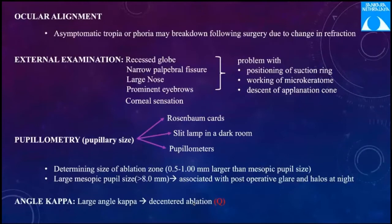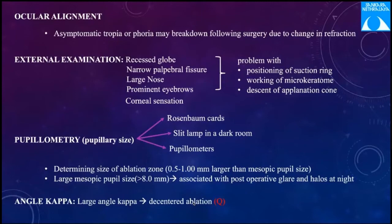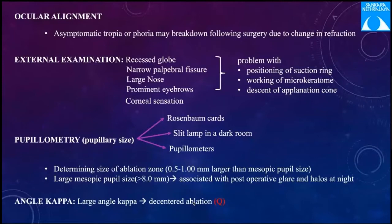Important axes include the visual axis, optical axis, corneal vertex, and pupillary axis — all are important when working with the laser. The visual axis is the line from the macula through the nodal point; the optical axis passes through the center of the cornea and lens; the corneal vertex passes only through the center of the cornea. A large angle kappa can result in a decentered ablation.